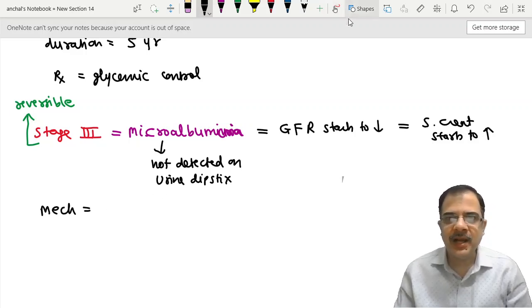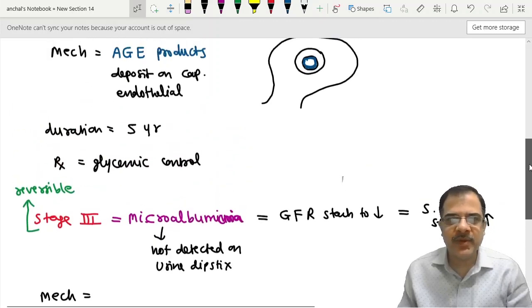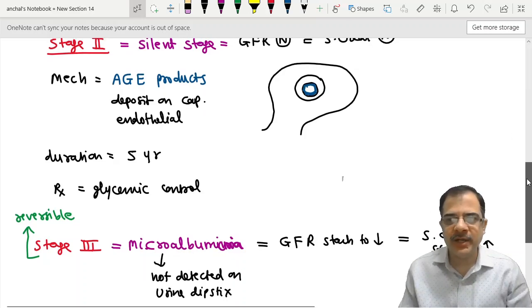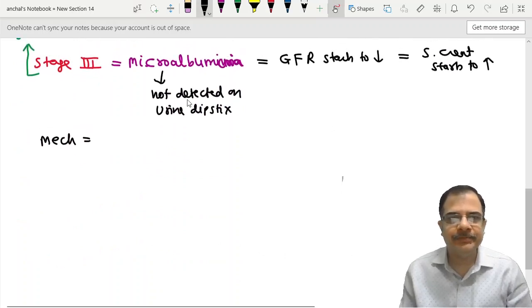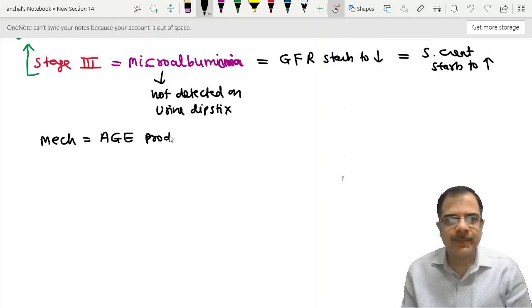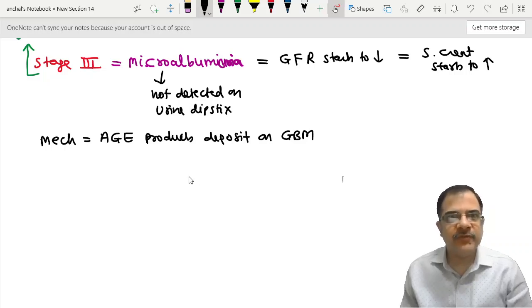What exactly is the mechanism? Mechanism is that the AGE products now start depositing on the GBM. And GBM function was to prevent protein filtration. So these AGE products deposit on the GBM, decreasing its negative charge. So albumin starts leaking initially in a small quantity. The mechanism is AGE products deposit on GBM, and albumin causes free radical injury to the kidney, tubules, and parenchyma.